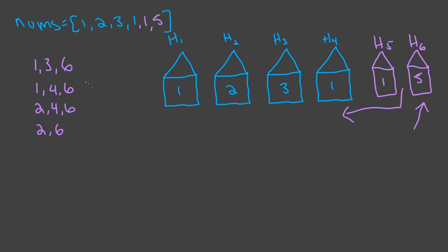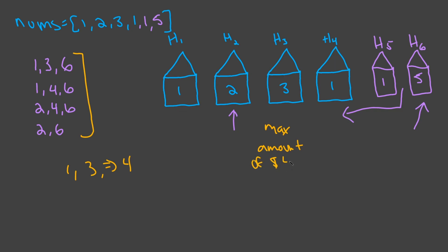So what we can do is use dynamic programming to keep track of the max up to that house. By the time we get to house 6, we want to have the most optimal route already saved. We know that robbing house 1 and house 3 gives us $4, so at house 3 we save that max. When we skip to house 6, we already have $4, so we just add house 6's value: $4 + 5 = $9, which is the max for this array.